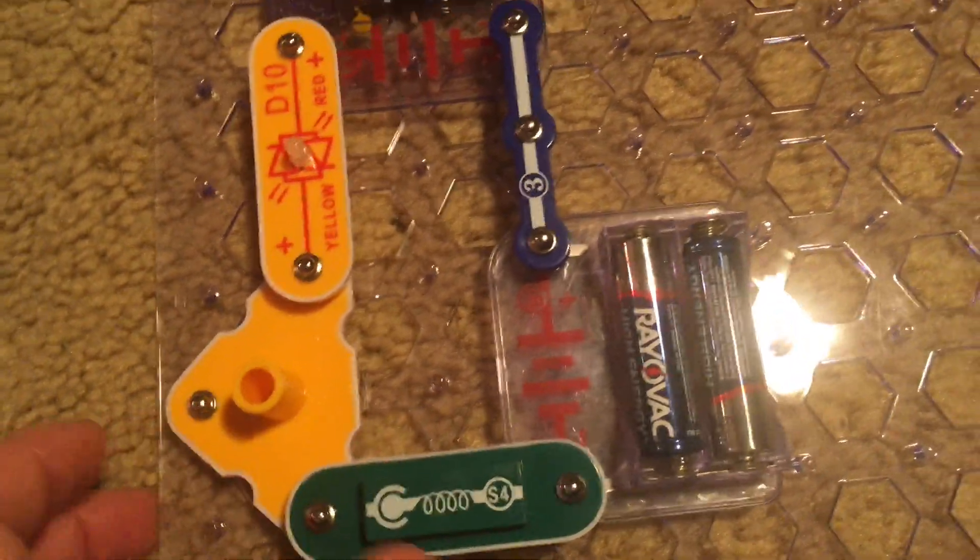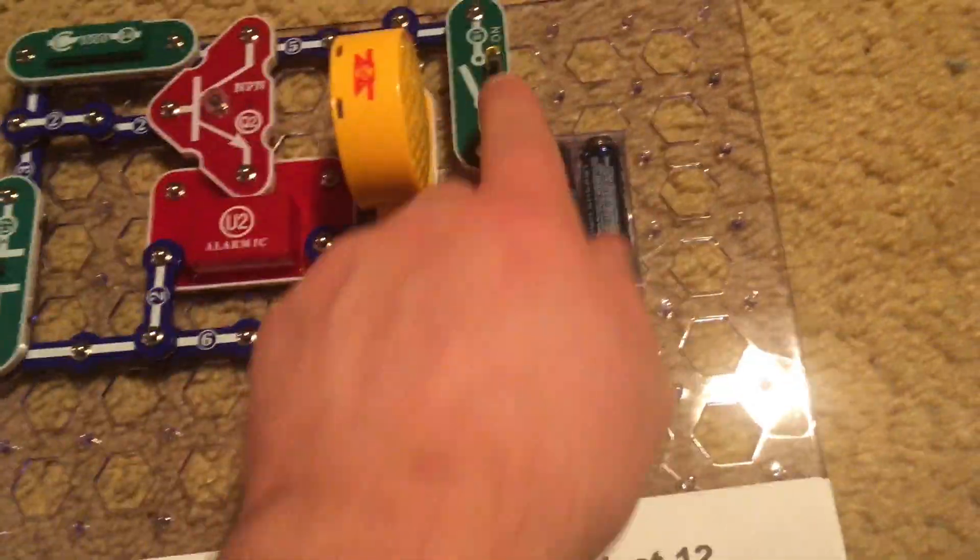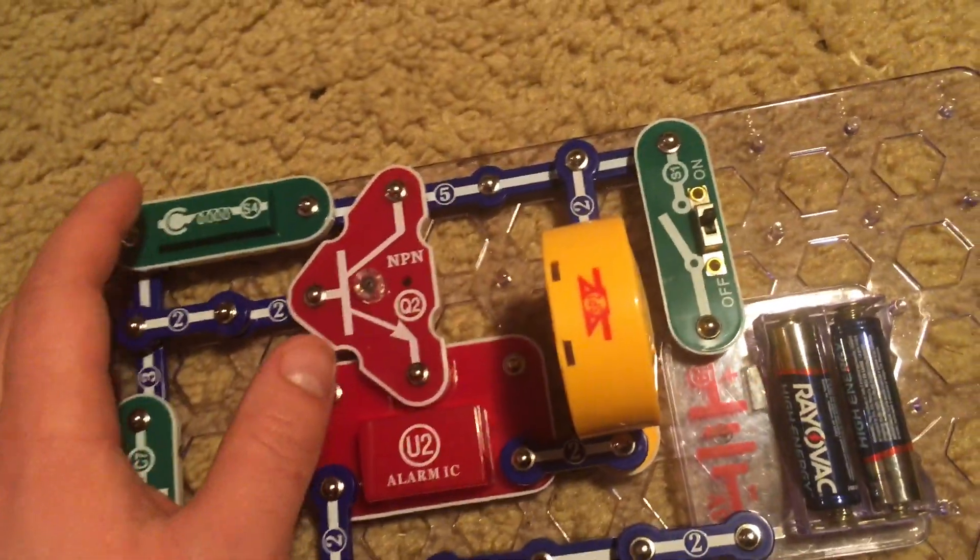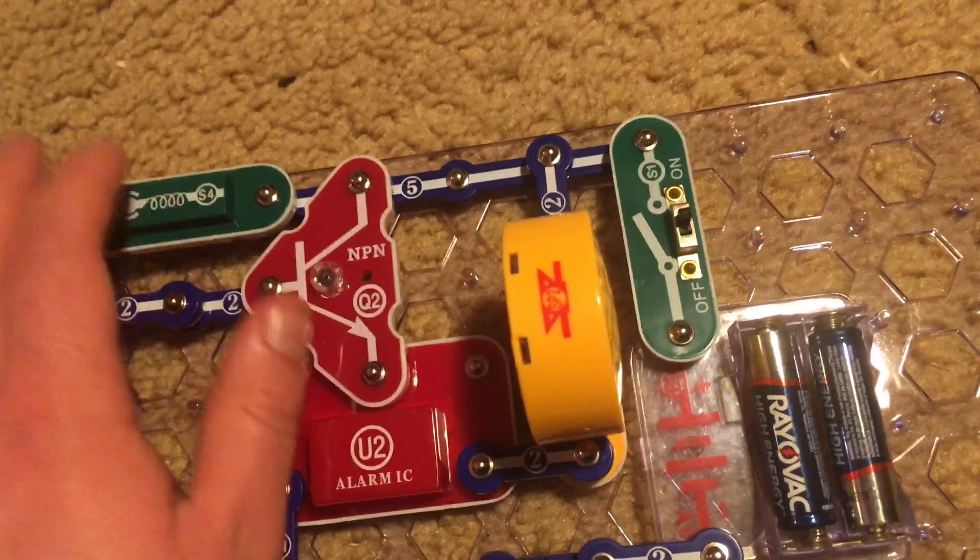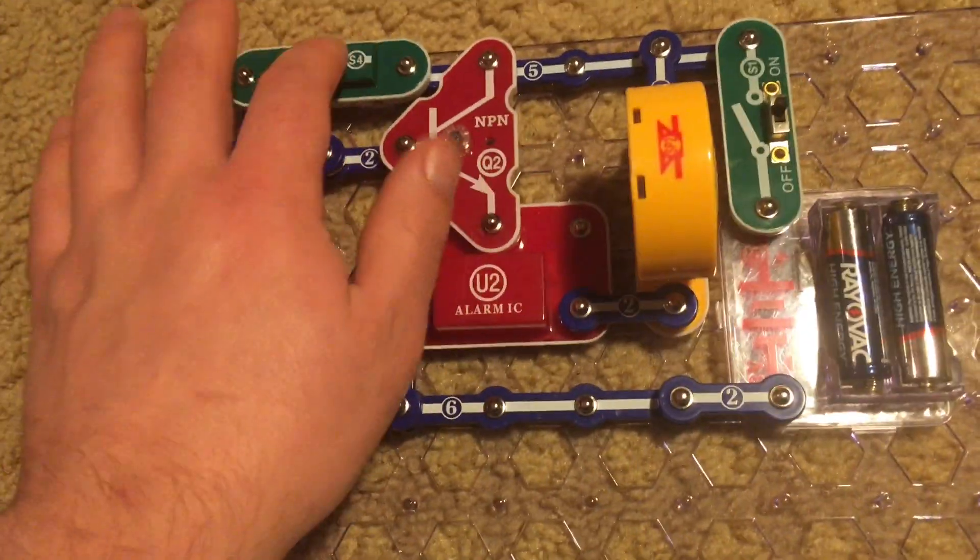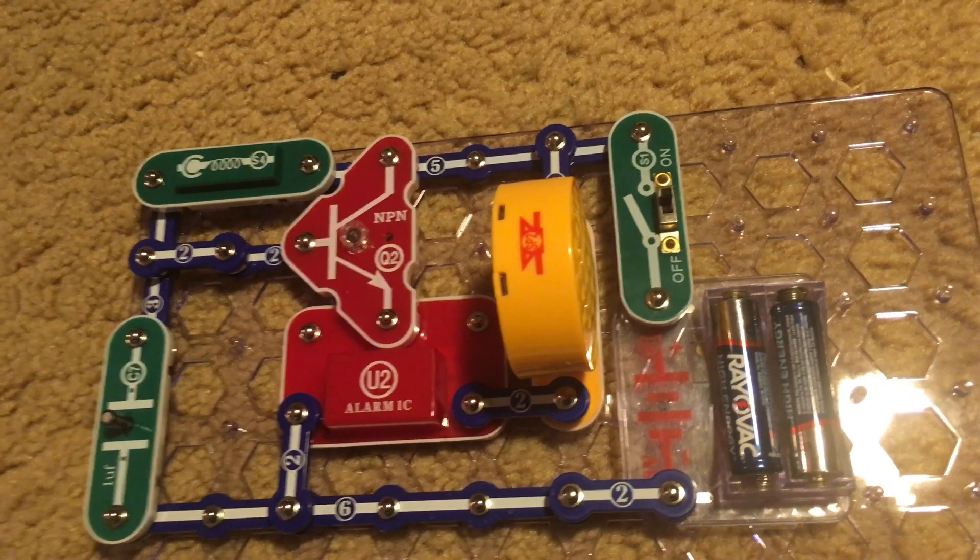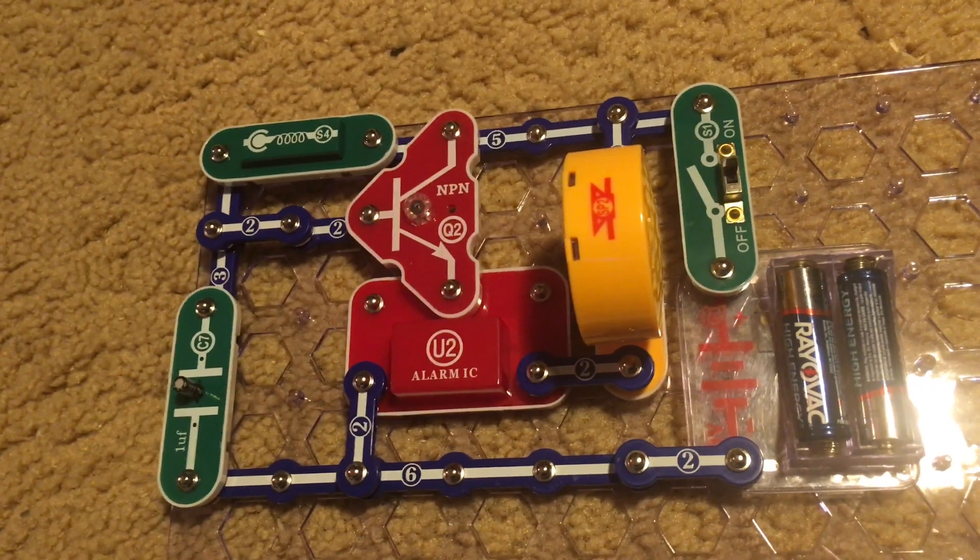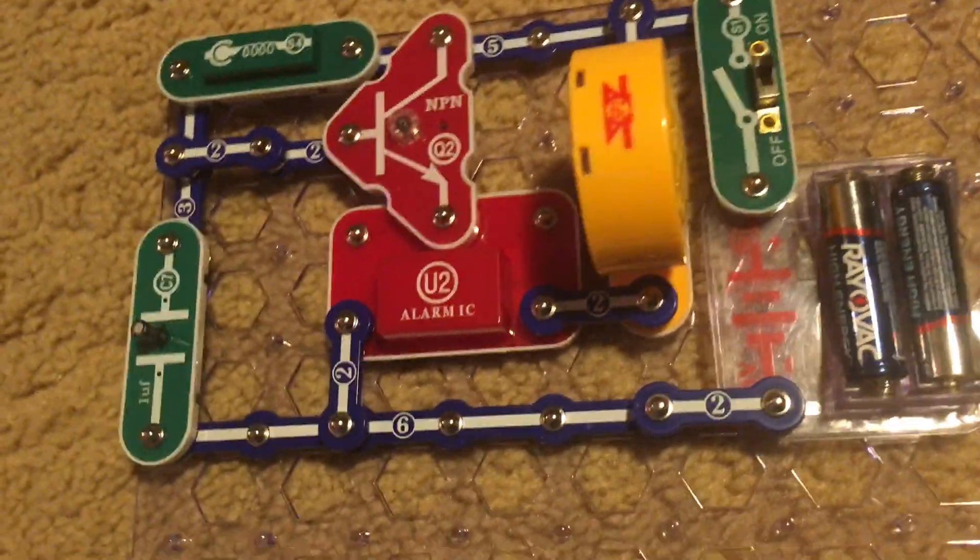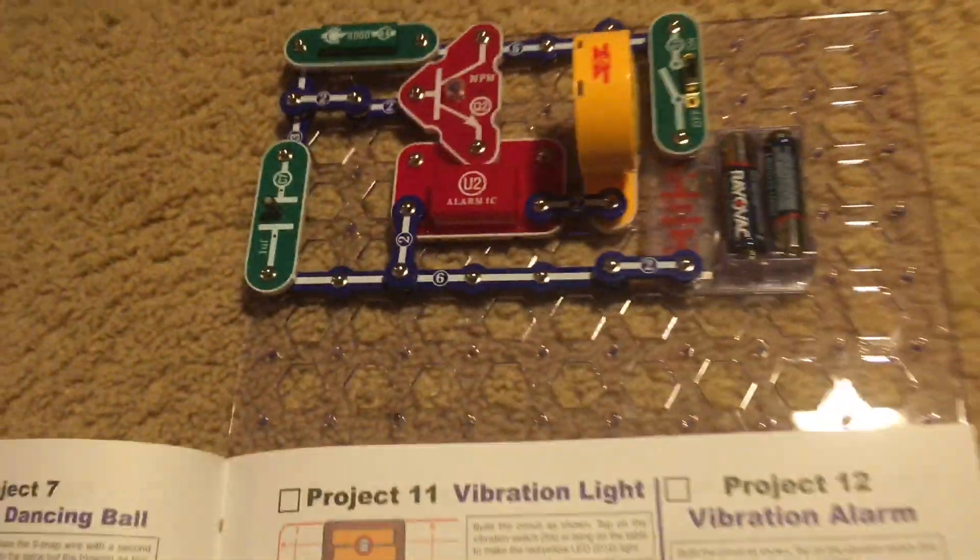This could be a possible earthquake detector. For project 12 vibration alarm, I'm going to turn on the slide switch. Nothing happens. Now please turn down your volume because this may be loud, but I am going to tap the vibration switch. This time, instead of turning on an LED, when the vibration switch is triggered, an alarm sounds. This could be a good example of an earthquake detector that may go off if there was a very severe tremor or shaking. It has to be strong enough to make the switch vibrate to trigger the alarm.